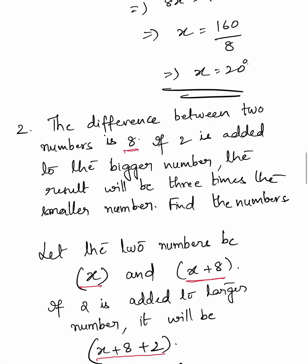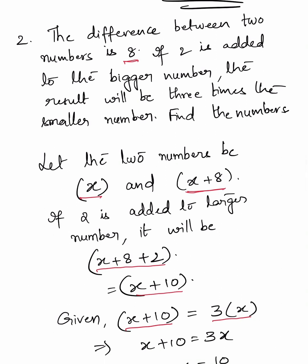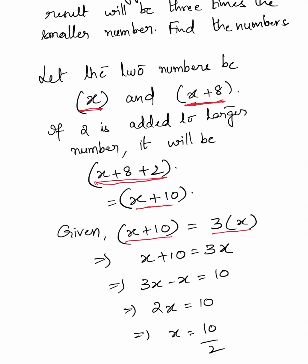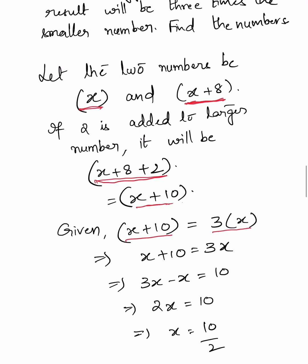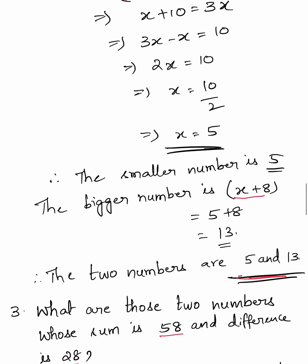Second problem: The difference between two consecutive numbers is 8. If 2 is added to the bigger number, the result will be 3 times the smaller number. Let the two numbers be X and X plus 8. Adding 2 to the larger number gives X plus 10. So X plus 10 equals 3X, meaning 2X equals 10 and X equals 5. The smaller number is 5 and the bigger number is 5 plus 8, which is 13.